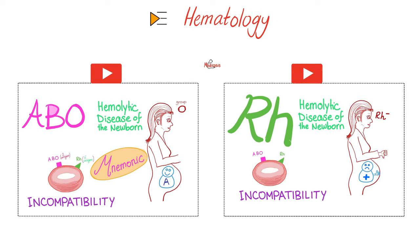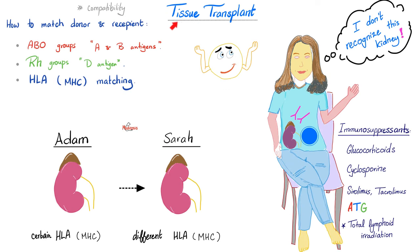Other important topics include ABO incompatibility and RH incompatibility, discussed in detail in the hematology playlist. Let's talk about tissue transplant. Adam is donating a kidney to Sarah because Sarah needs a kidney. Adam has a different MHC than Sarah — what's histocompatible with Adam might not be the same as what's compatible with Sarah. Sarah recognizes the kidney as foreign and starts attacking and destroying it after the transplant surgery — this is organ rejection.